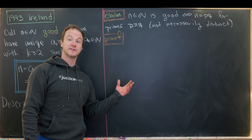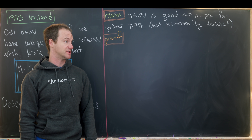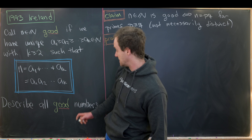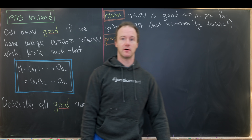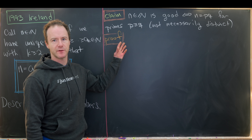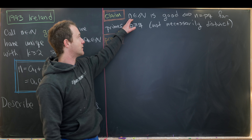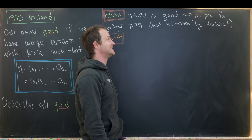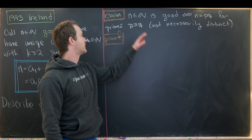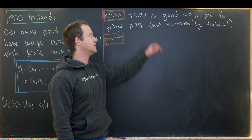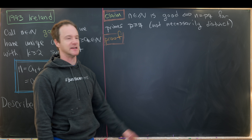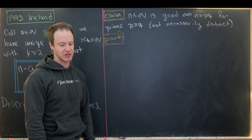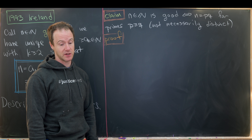We're ready to make a careful statement from our exploration and prove it, solving the problem. The claim is: a natural number n is good if and only if n = p × q for primes p ≥ q (not necessarily distinct).